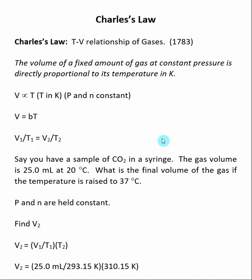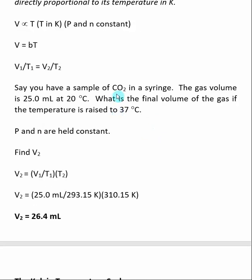So let's look at an example of Charles's Law. In here, I have a sample of a gas, CO2, and it's in a syringe in this case, but this is just a container. Initially, the gas volume is 25 milliliters, and my temperature is 20 degrees C. What would be the final volume of the gas if the temperature is raised to 37 degrees C?